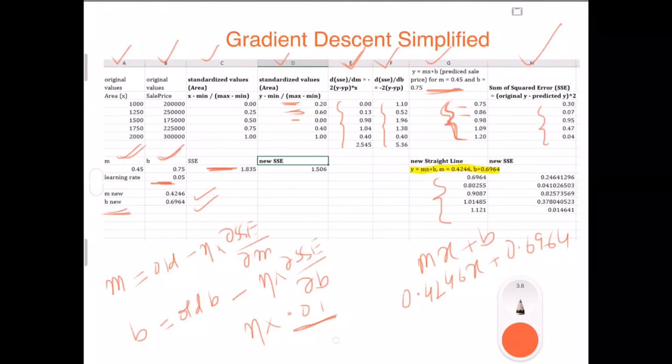Now because we took the negative gradient, we are trying with a new value. And then we also similarly got a new sum of squared error, which is exactly the same calculation that we saw here. Once we got this new sum of squared error, finally when you calculated the new sum of squared error is 1.506. That means I have reduced my sum of squared error by changing the value of M and B.